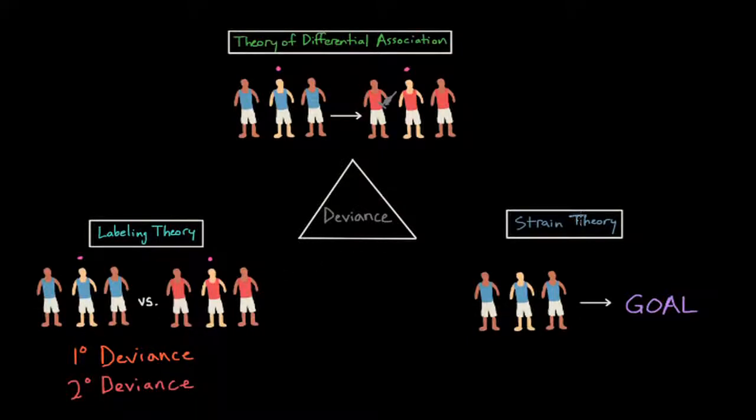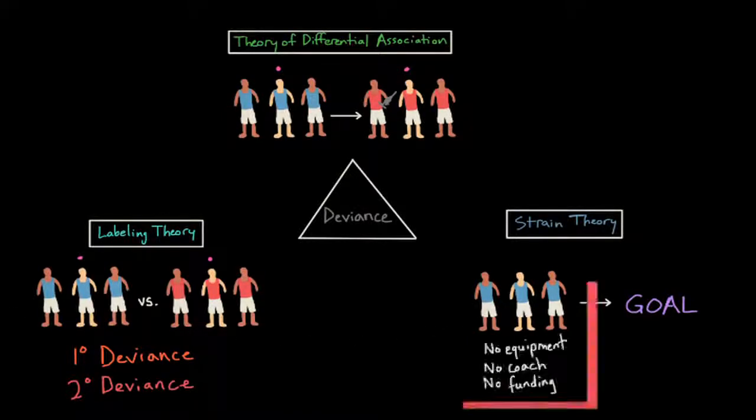Now the last theory of deviance that we'll cover is called strain theory. And strain theory suggests that if a person is blocked from attaining a culturally accepted goal, they become frustrated or strained and turn to deviance.